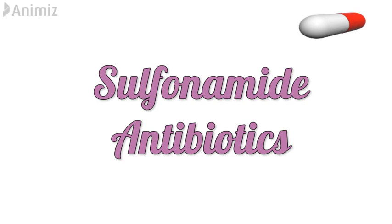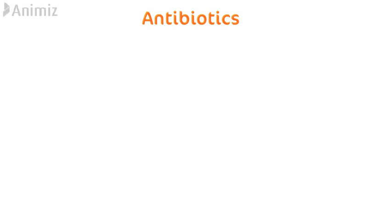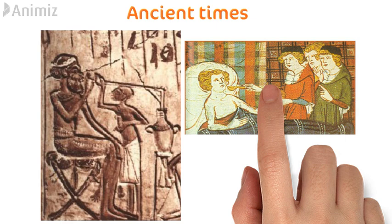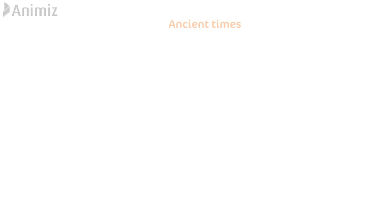First, let's see what antibiotics are. An antibiotic is a chemical substance derived from a microorganism that kills or inhibits the growth of other microorganisms. Antibiotics were known since ancient times, where people used natural extracts to alleviate disease, but this was truly based on trial and error. Earlier, people used to extract antibiotics naturally from molds or bacteria, as in the case of penicillin.